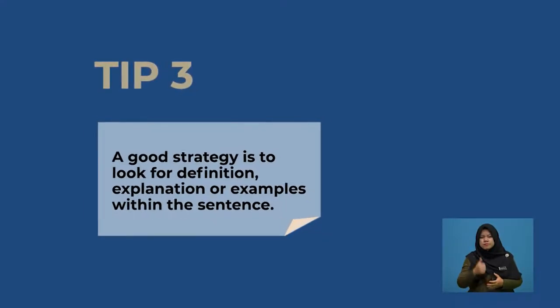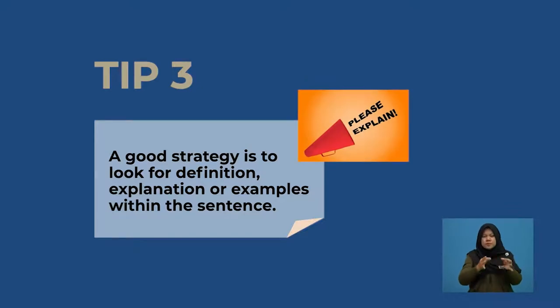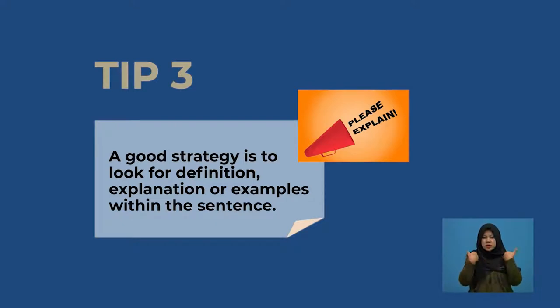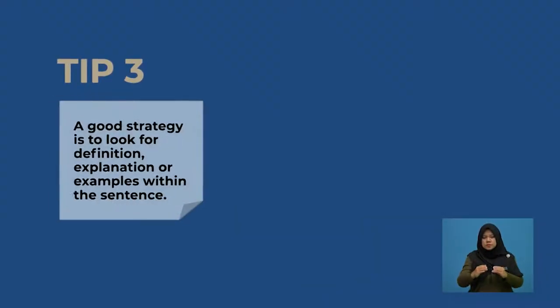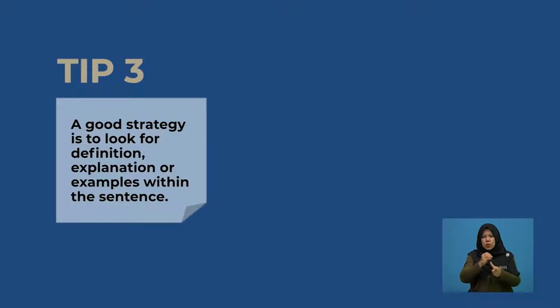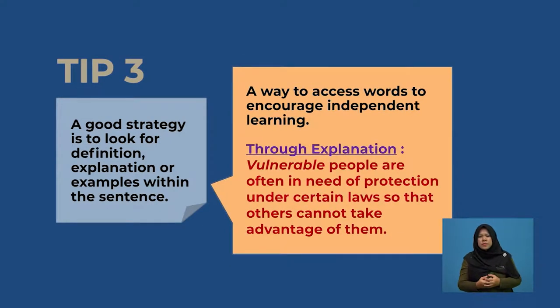Tip 3 explains that a good strategy is to look for definition, explanation or examples within the sentence. This is crucial as sometimes you come across sentences where the explanation can appear directly or indirectly. All you need to do is read carefully and try to derive meaning by making references to the neighbouring words. This is a very effective way to access words and encourage independent learning.